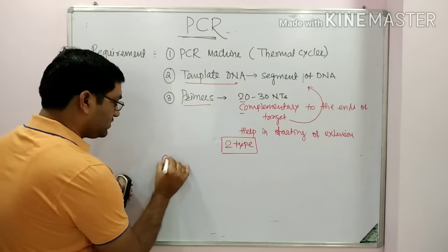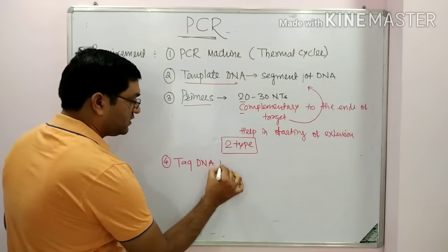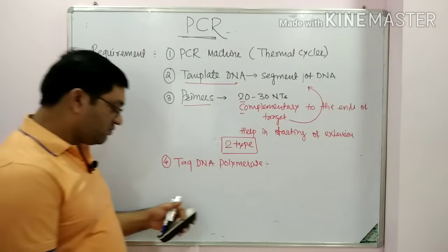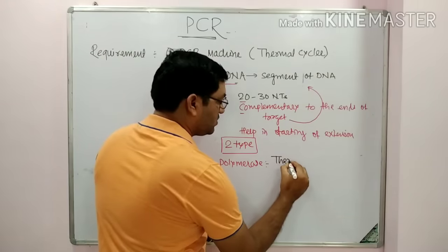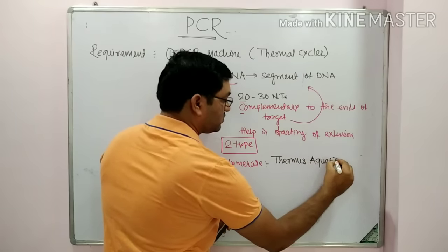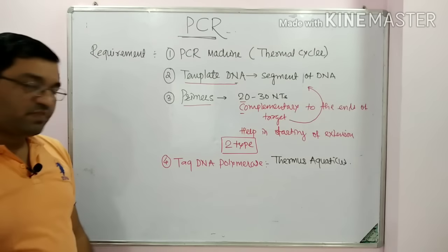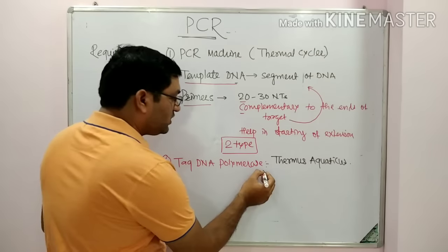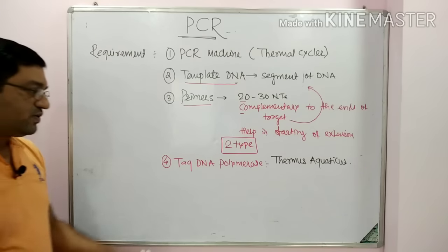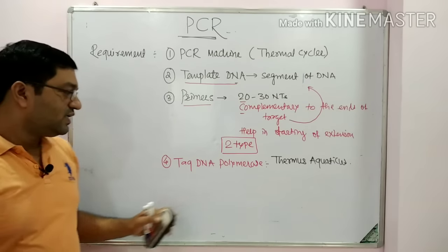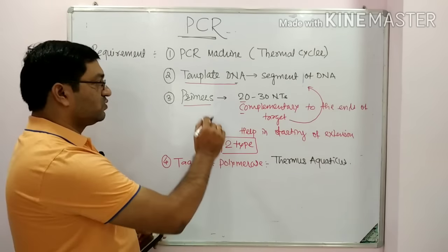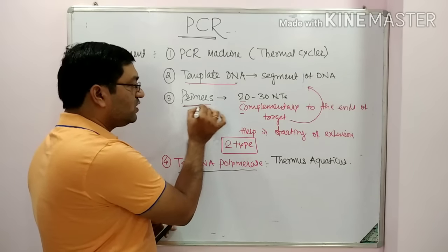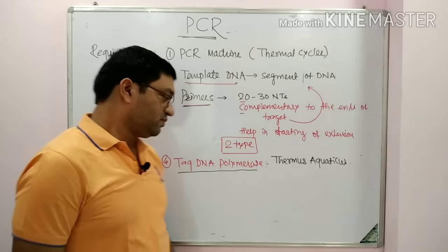The fourth requirement is Taq DNA polymerase. This polymerase is from Thermus aquaticus. It is found in hot springs and can withstand temperatures up to 90–95 degrees centigrade, making it useful in PCR reactions. What is the role of DNA polymerase? It can extend nucleotides and is responsible for synthesis of new DNA over a template DNA using oligonucleotide probes. It also has exonuclease activity.